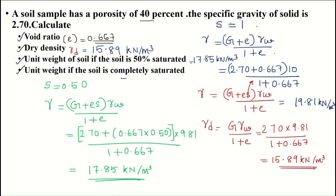The unit weight of soil if the soil is completely saturated is 19.81 kilonewtons per meter cubed.